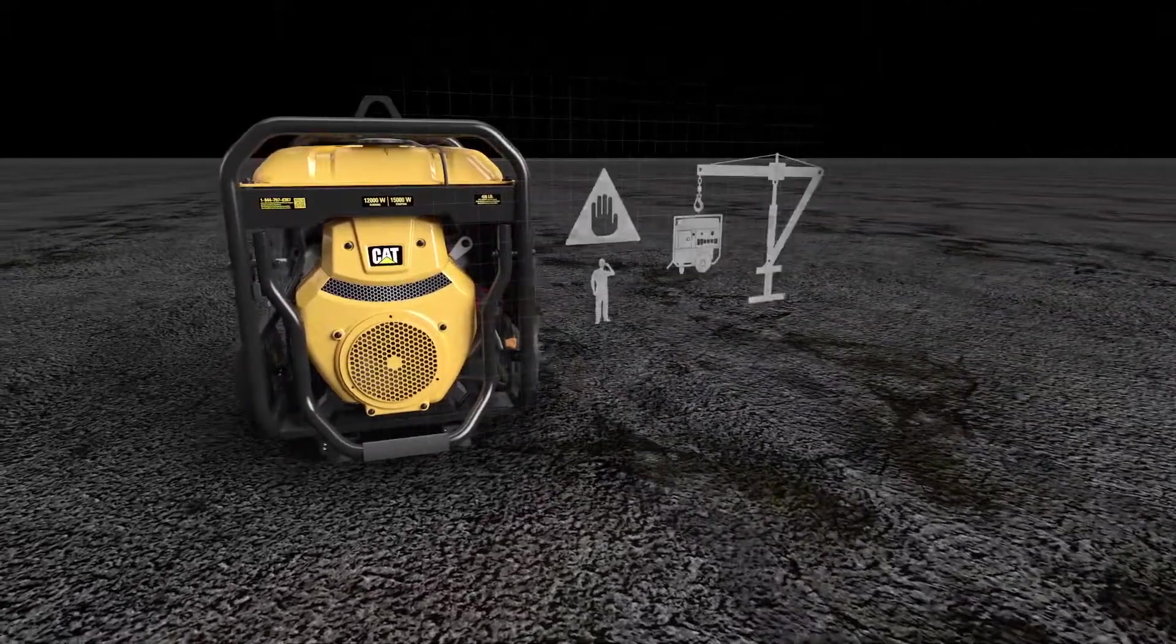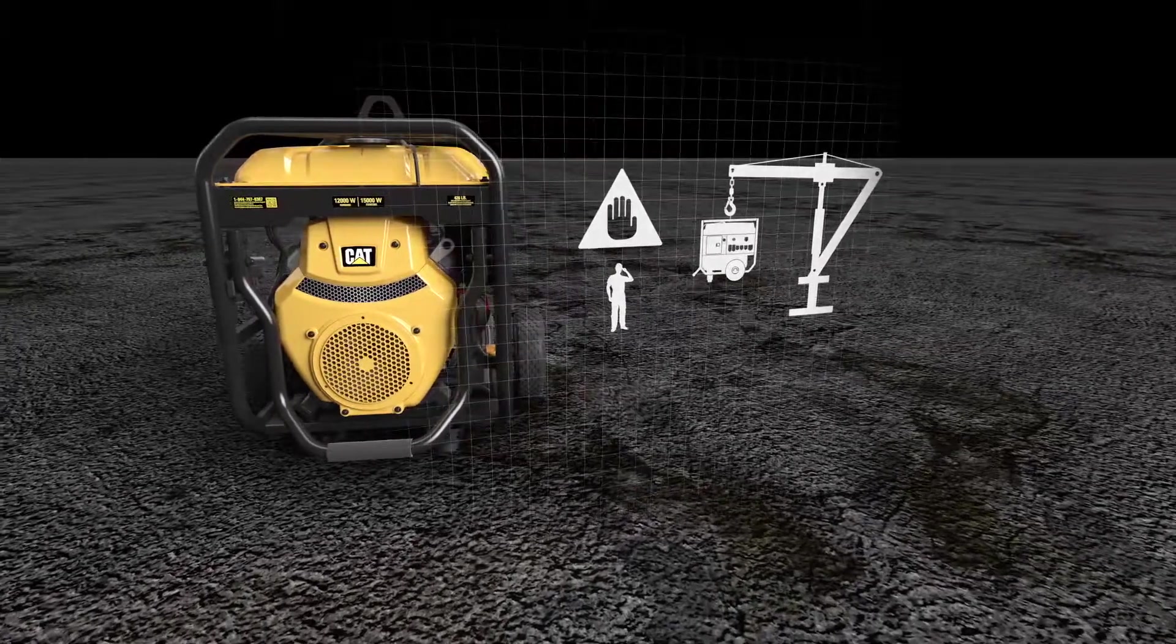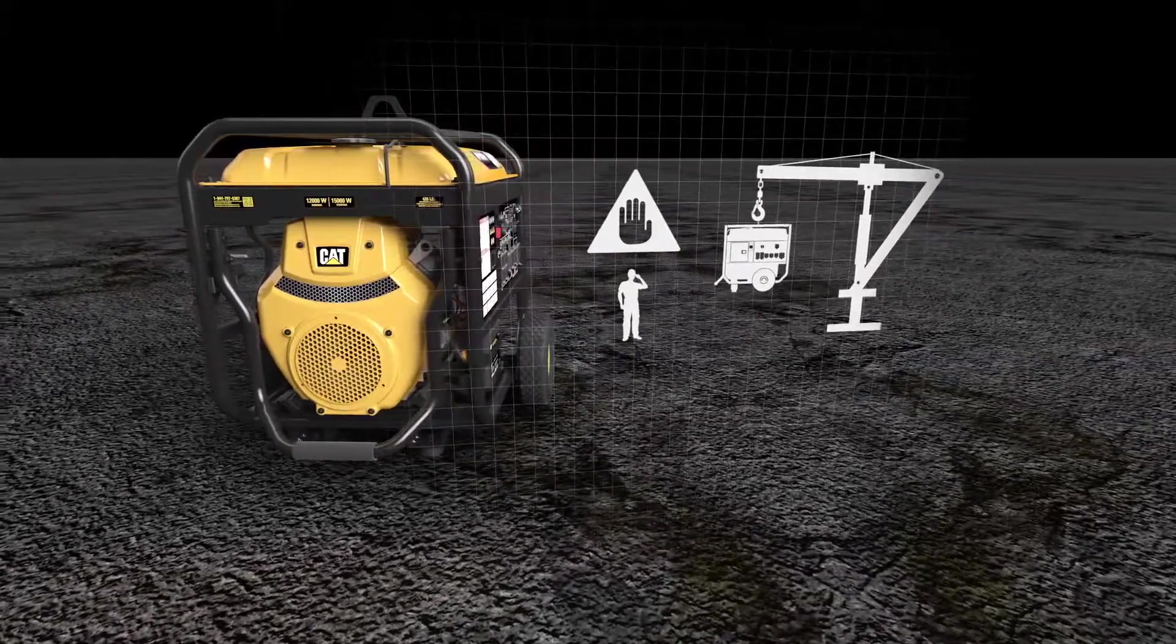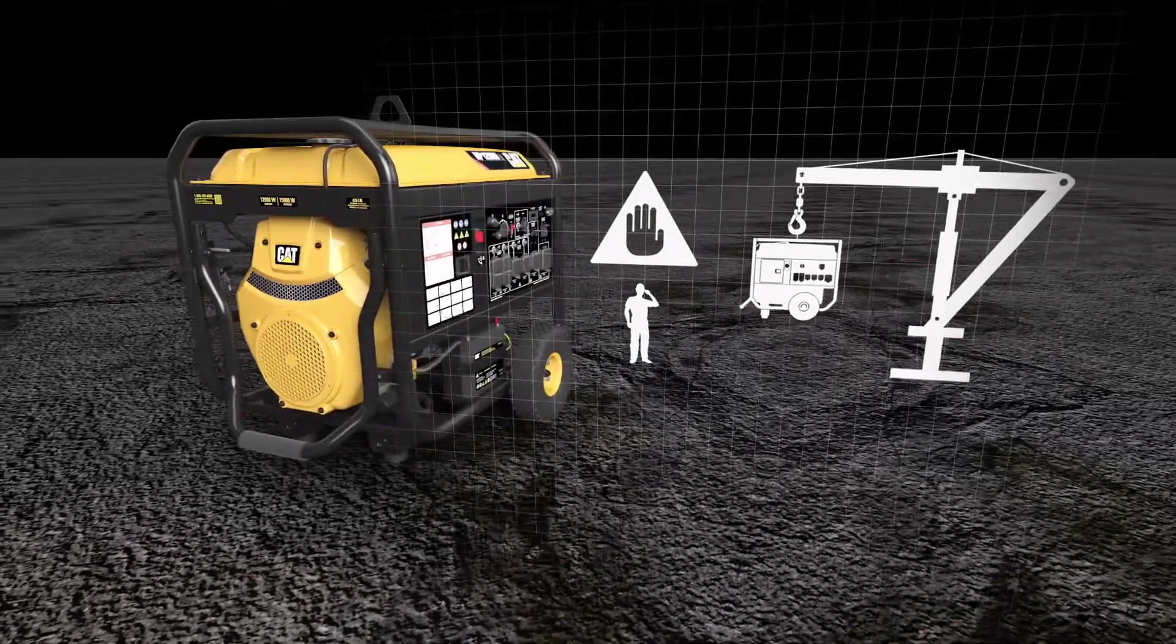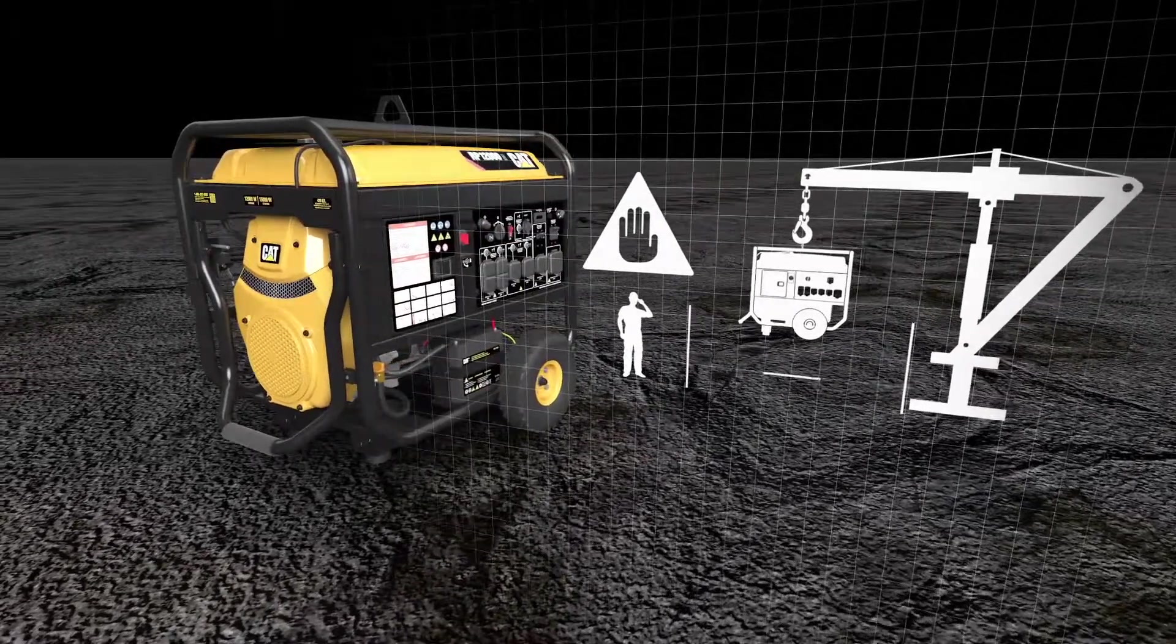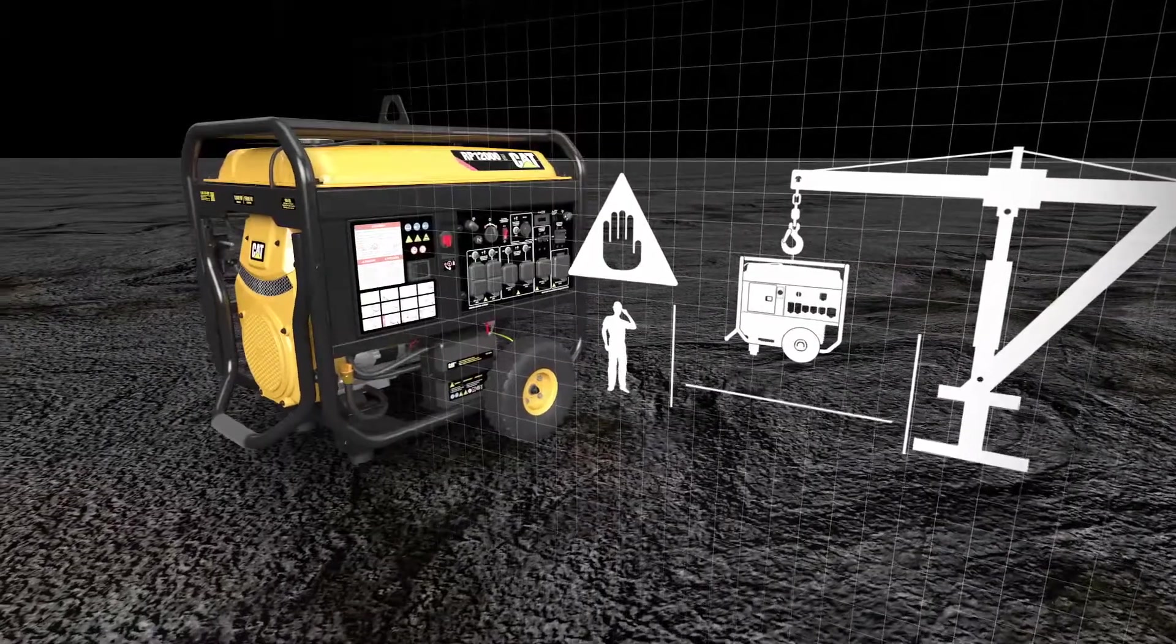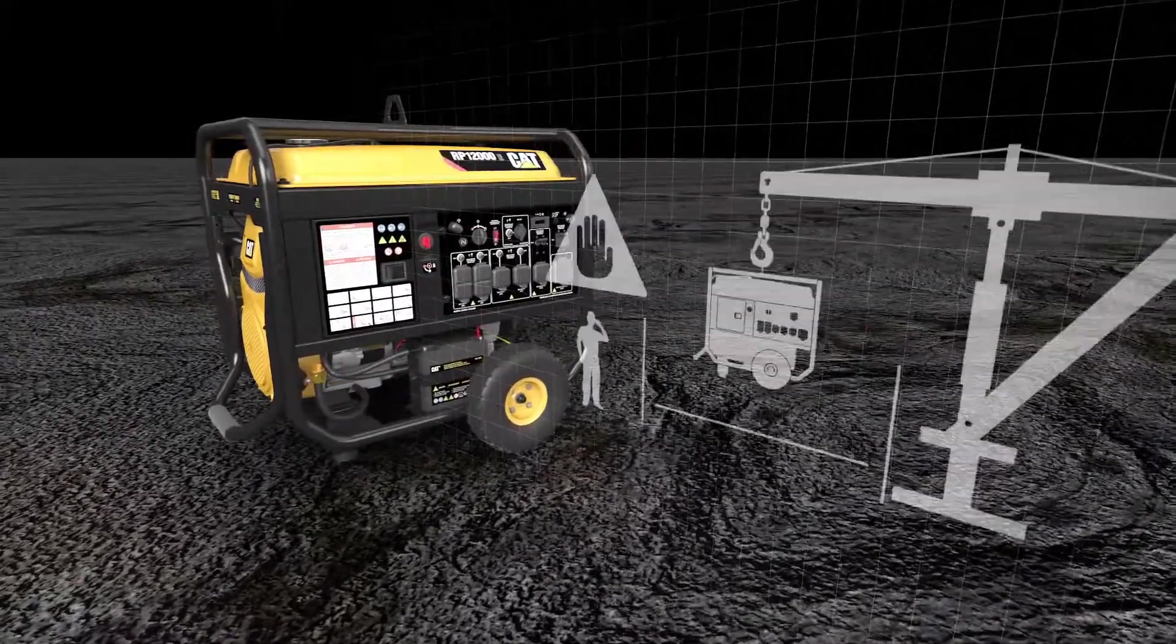Exercise extreme caution at all times, especially when the portable generator is suspended. Do not stand or pass directly under or within a 10-foot or 3.05-meter radius of a suspended portable generator.